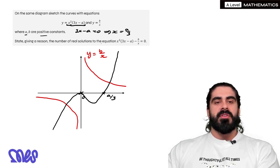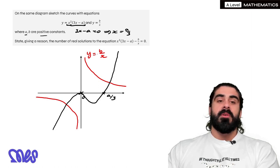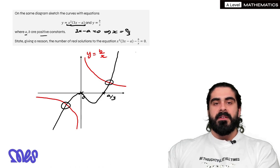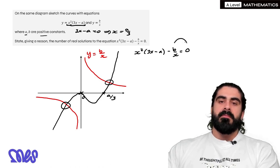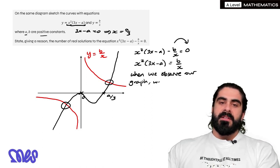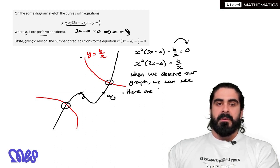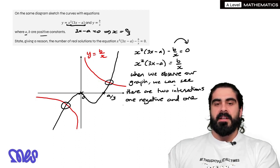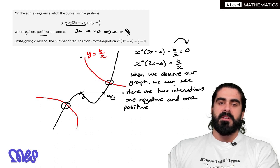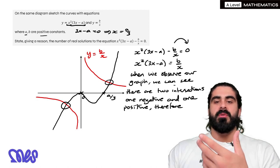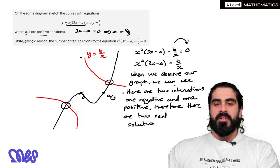It says state, giving a reason, the number of real solutions to x squared times 3x minus a minus b over x equals 0. We do the same as before — rearrange by moving b over x across. When we observe the graph, we can see there are two intersections: one negative and one positive. Therefore, there are two real solutions.